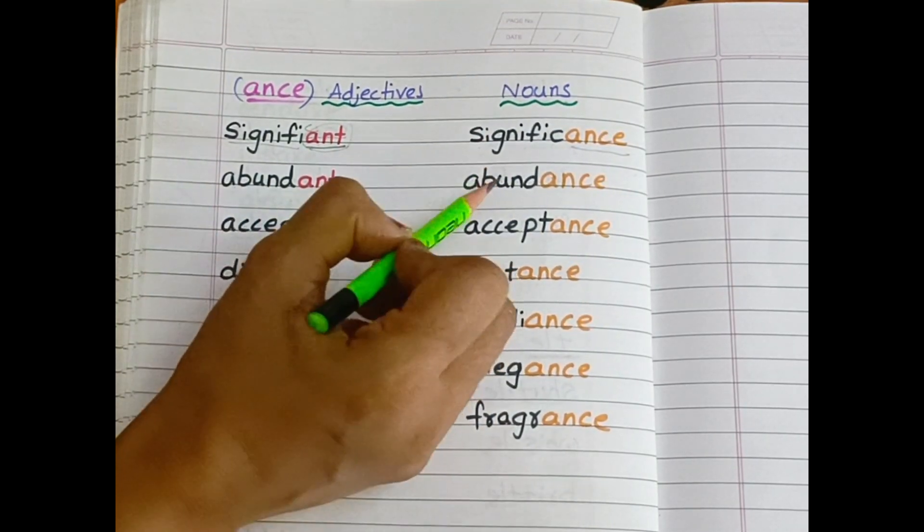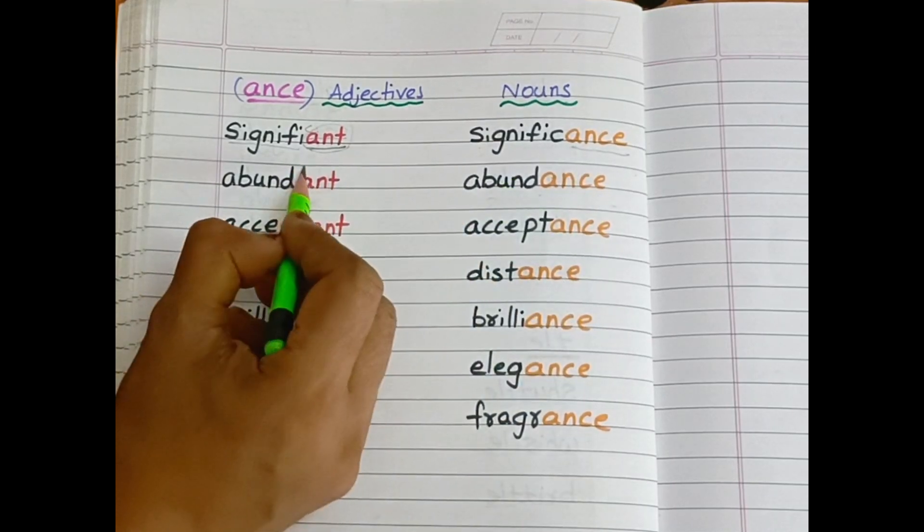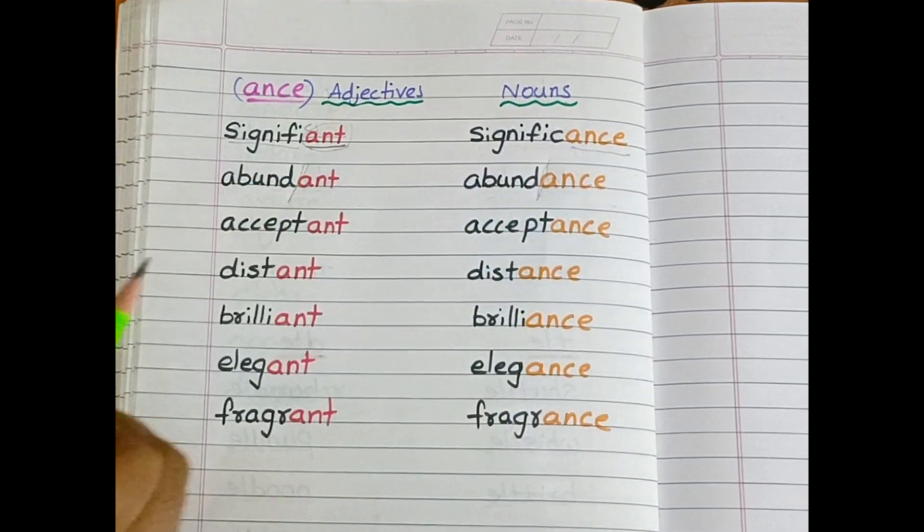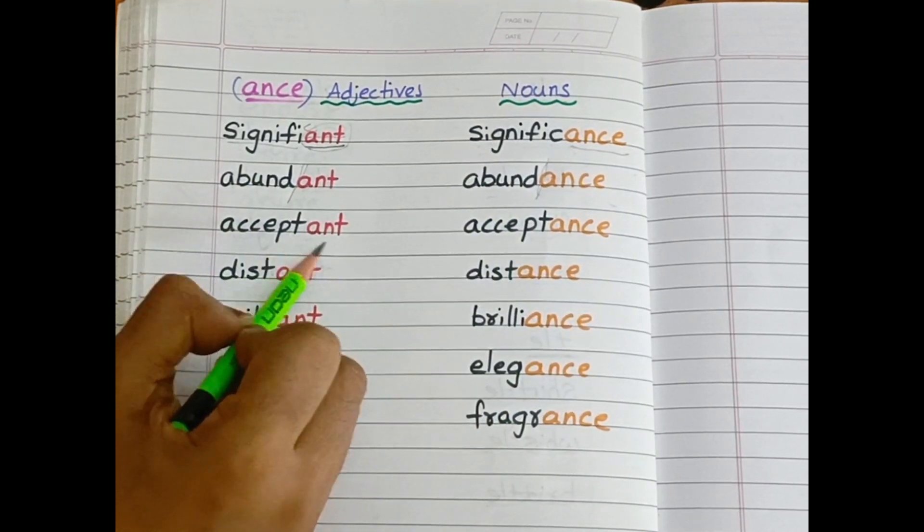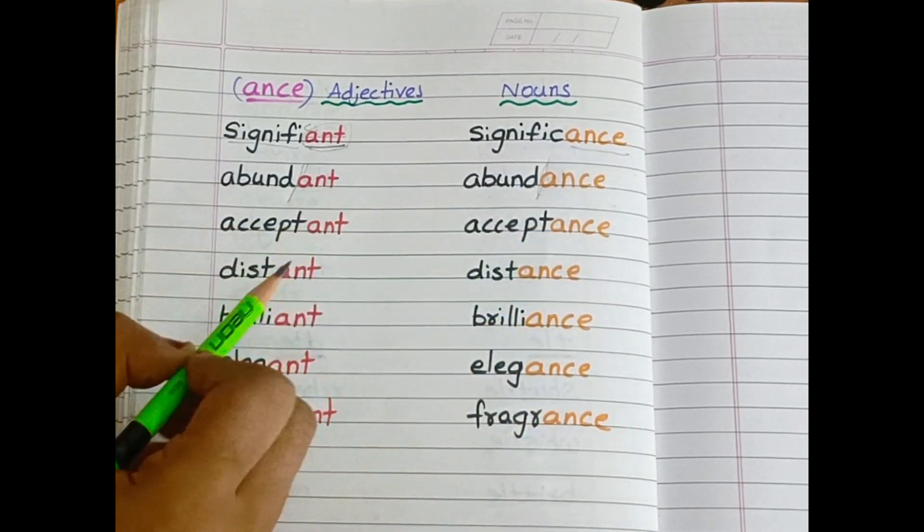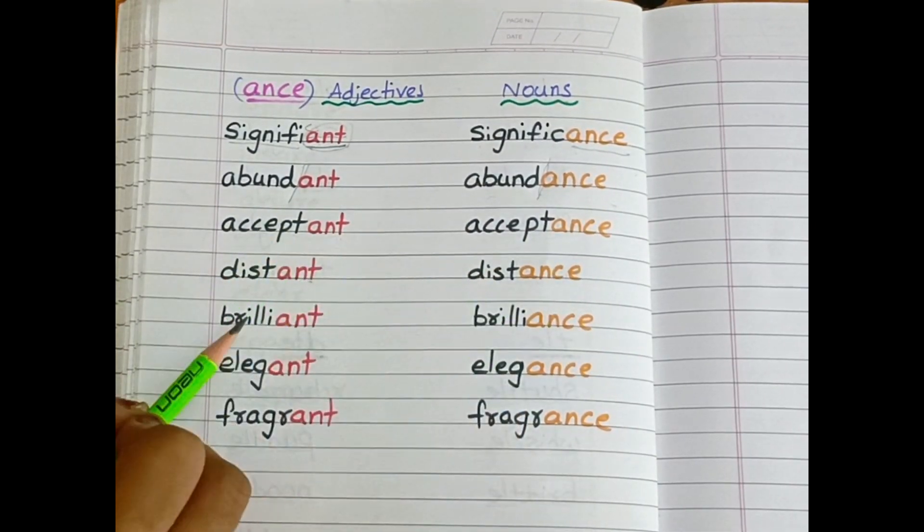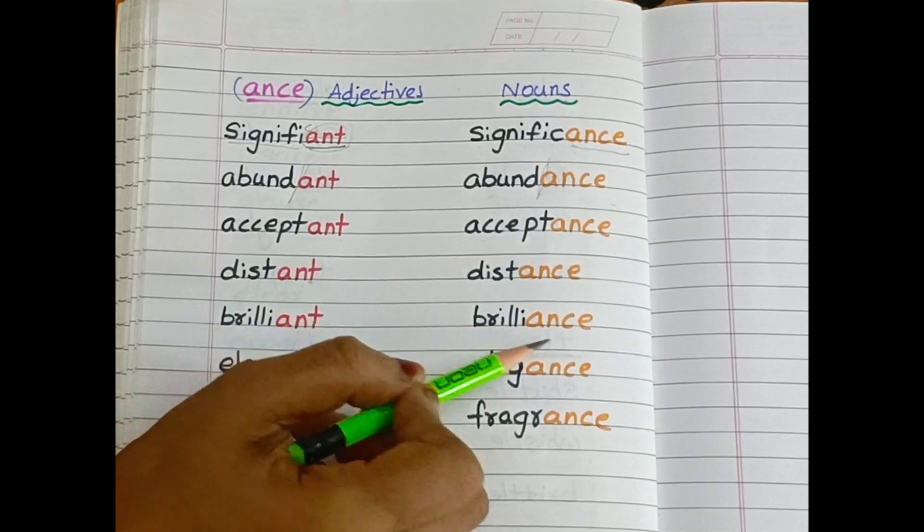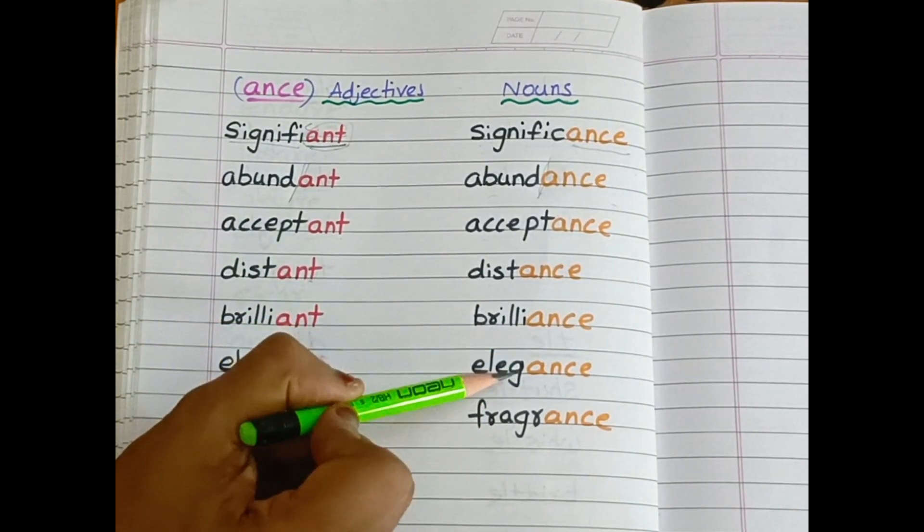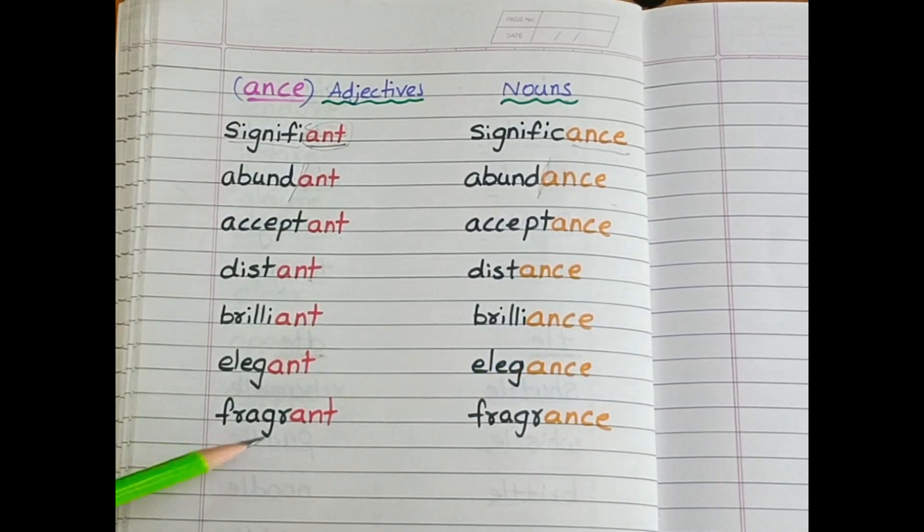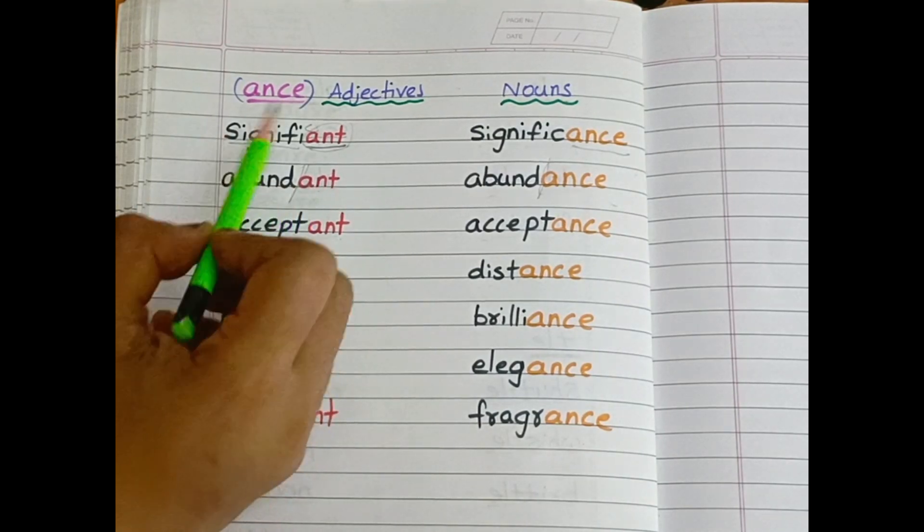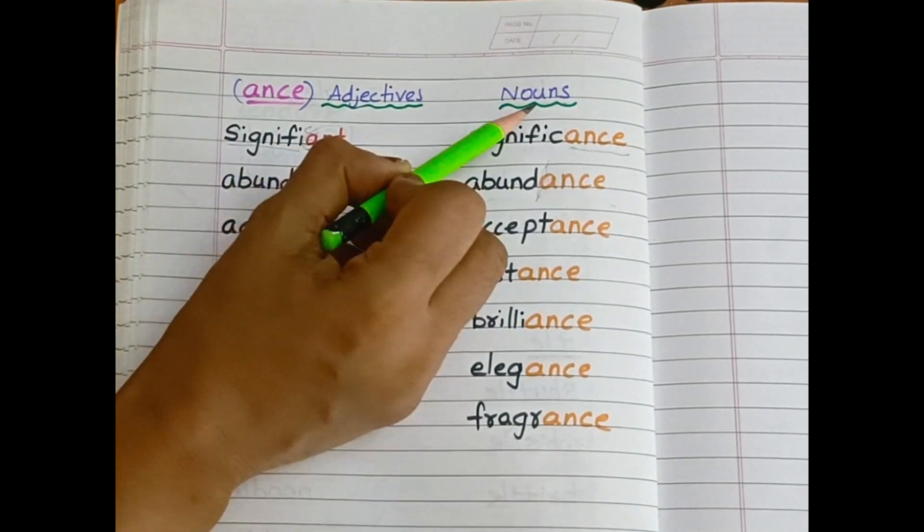Abundant—abundance. Here, replace a-n-t with a-n-c-e. Acceptant—acceptance. Distant—distance. Brilliant—brilliance. Elegant—elegance. Fragrant—fragrance. So here adjectives change into nouns.